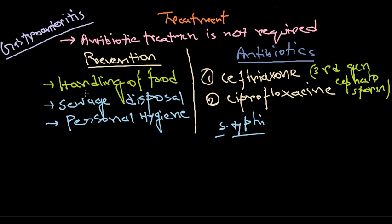But remember these three things: handling of food should be well, sewage disposal should be perfect, and personal hygiene is definitely required. Most gastroenteritis infections occur in third-world or developing countries where there's poor hygiene, sewage problems, and sanitary systems are not good.